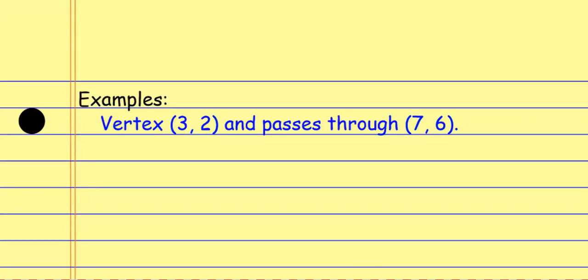For this next one, I'm given the vertex and a point that the parabola passes through. No matter what format it's asking for, I'm always going to start in vertex form — vertex form is the gateway. I need the vertex and the a value. I already have the vertex: it's 3, 2. But now I need the a value and I'm not directly given it. The vertex gives me hk, and the ordered pair gives me an x and y combination.